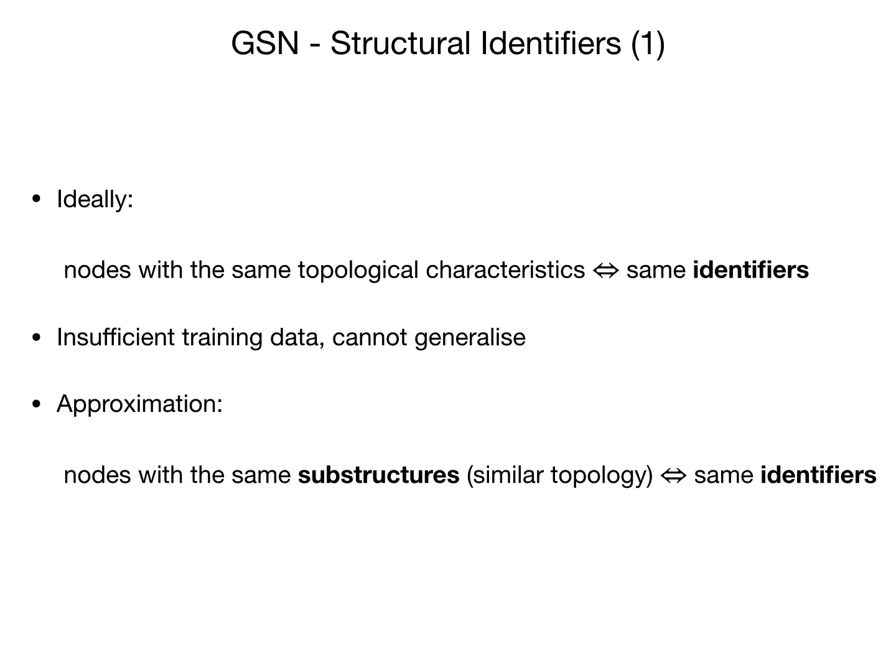Now, how do we construct the structural identifiers? Ideally, we would want nodes with the exact same topological characteristics to be assigned the same identifiers. However, in real-world networks, it is very rare to have two nodes with the exact same topology. Thus, we will have insufficient training data and our model won't be able to generalize to unseen topological characteristics. To address this issue, we resort to an approximation: instead of looking for exact topological matching, we look for similar topologies, reflected in the substructures where nodes belong. Then we assign the same identifiers to nodes with the same substructures.